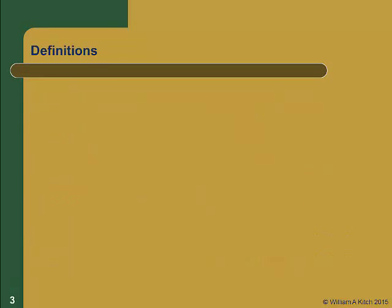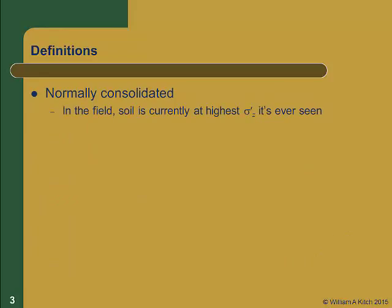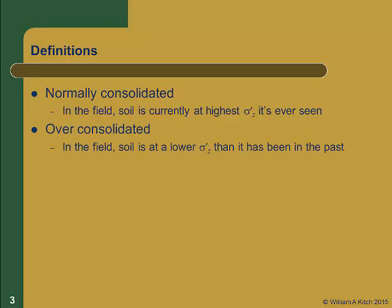Let's begin with a few definitions. If a soil is normally consolidated, that soil is currently at its highest effective vertical stress that it has ever seen. In contrast, if a soil is over consolidated, the current effective stress in the field is lower than the greatest vertical effective stress that it has seen in the past.